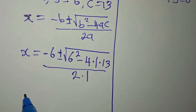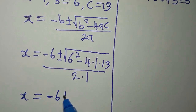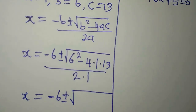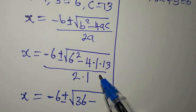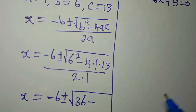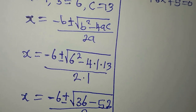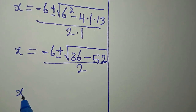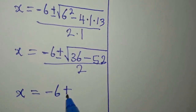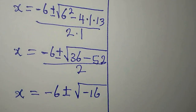Now our x will be minus 6 plus or minus. We have 6 squared which gives 36, minus 4 times 1 times 13 which gives 52. So we have 36 minus 52, which gives minus 16, and that will be over 2.